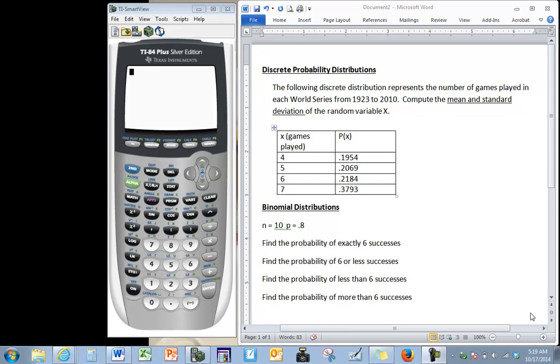In this video we will discuss how to calculate the probabilities for discrete probability distributions and for binomial distributions. For our first example we have a discrete probability distribution and on our calculator we need to press the stat button then select option number one for edit.